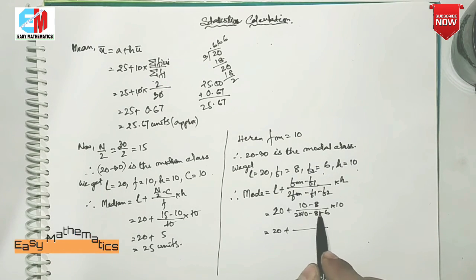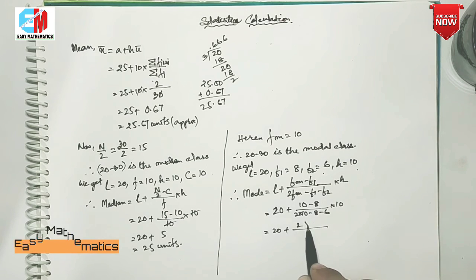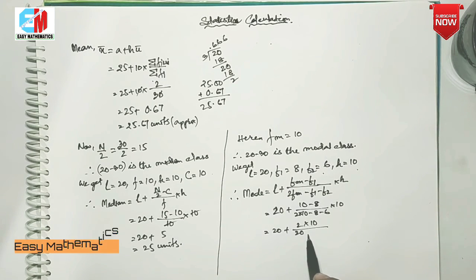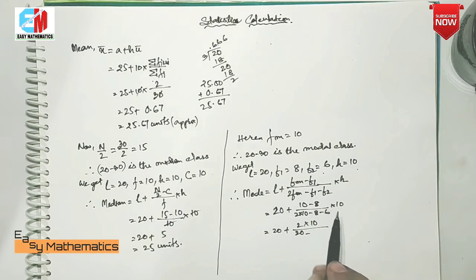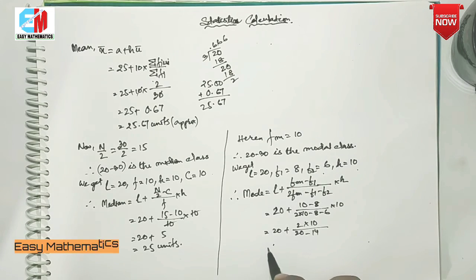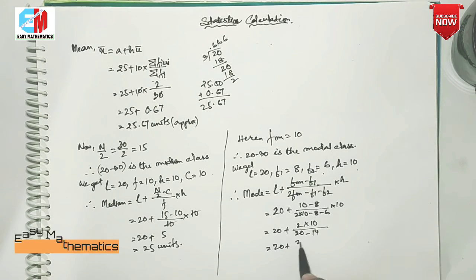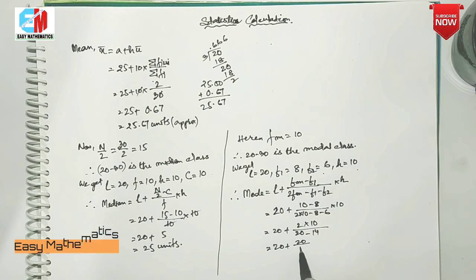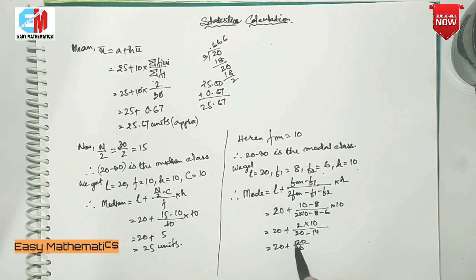We have to add 2 to 2. Then we add 2 to 2. We add 2 to 2 minus 2 to 3. We add 3 to 6. Then we add 2 to 2. Now we add 3 to 2.